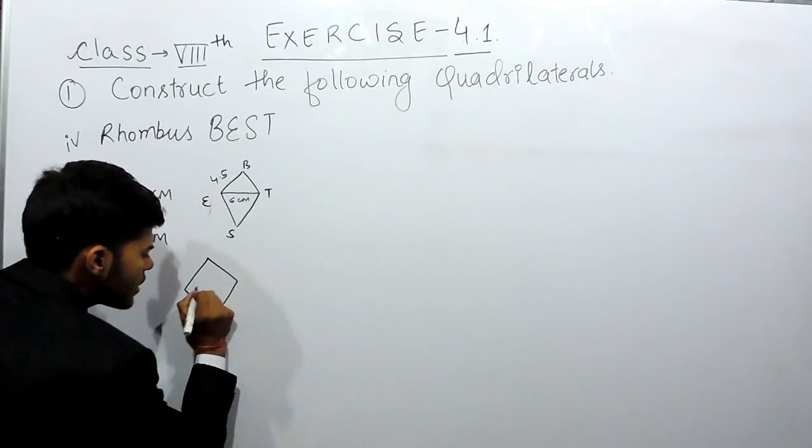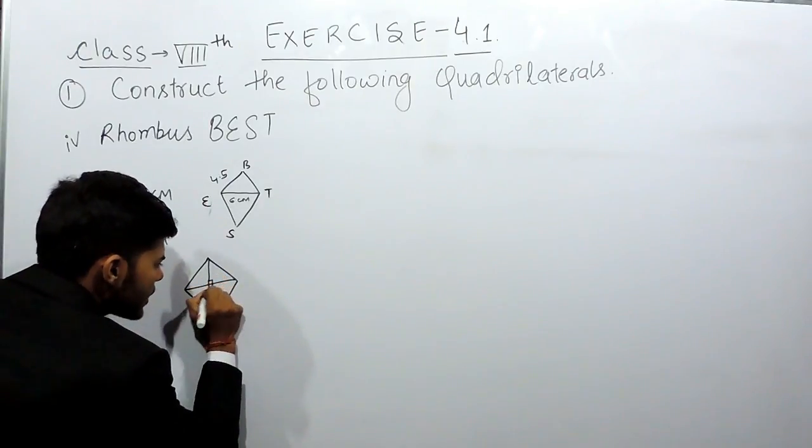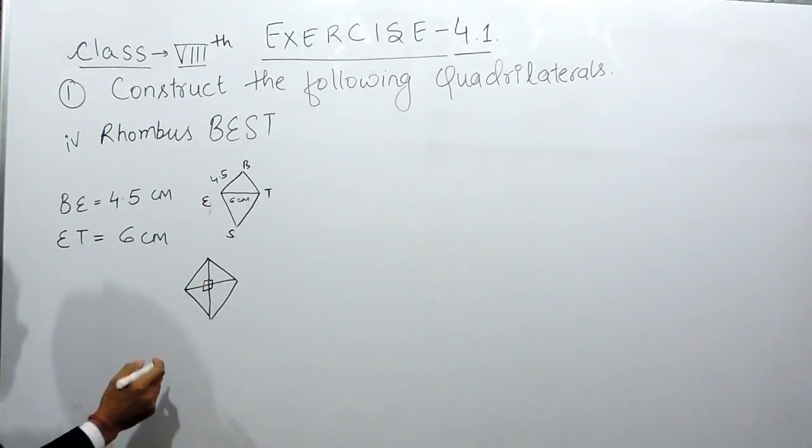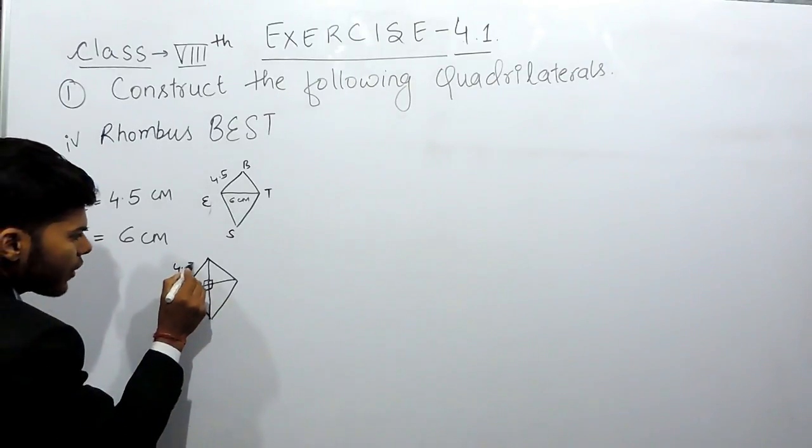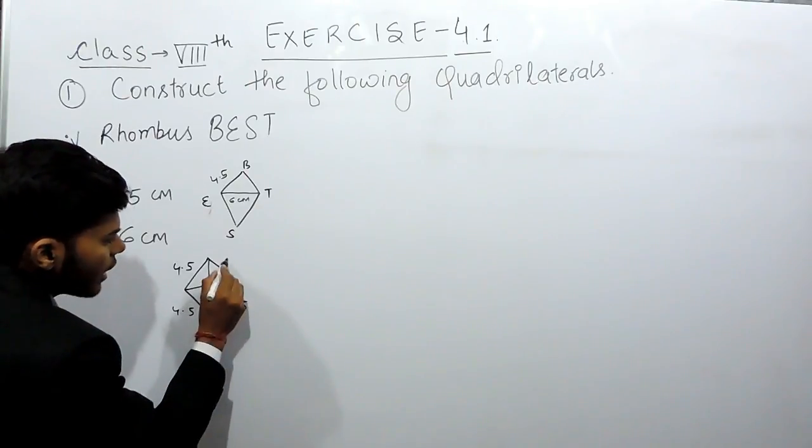Supposingly this is a rhombus, these two are the diagonals. They bisect each other at 90 degrees. These four angles are 90 degrees and if this is 4.5, 4.5, 4.5 and 4.5.